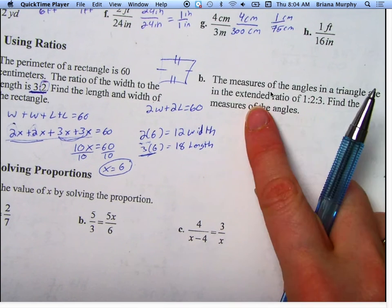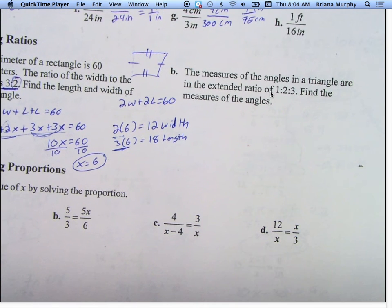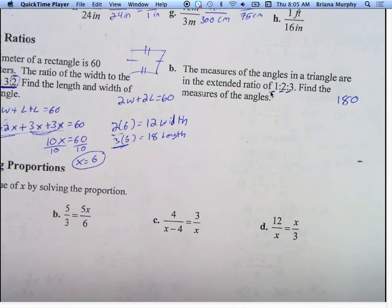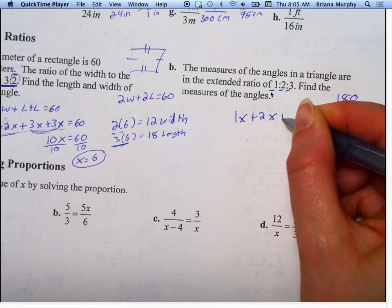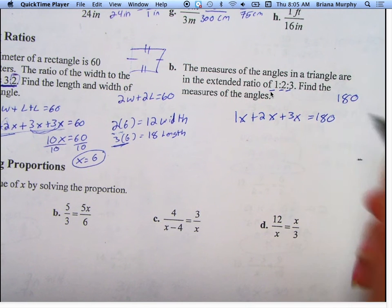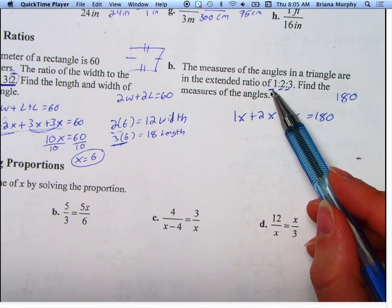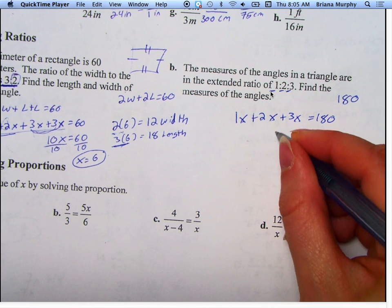The measures of an angle in a triangle are in the extended ratio 1, 2, and 3. Find the measures of the angles. What do the interior angles of a triangle add up to be? 180. Now all I'm going to do is put an x by each of these and add them up to 180. So I'm going to say 1x plus 2x plus 3x equals 180, because I know one angle, if I times it by 2 gives me the second angle, and if I take that first angle and times it by 3 I get the third angle. That's what that ratio is telling me.